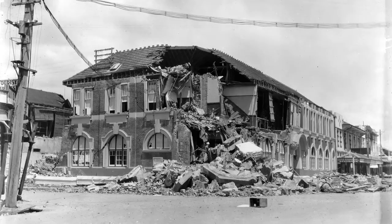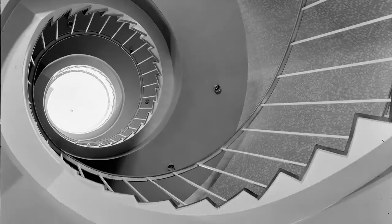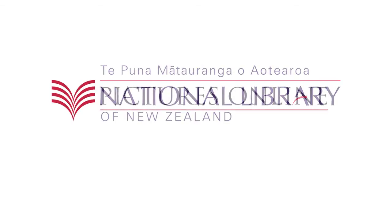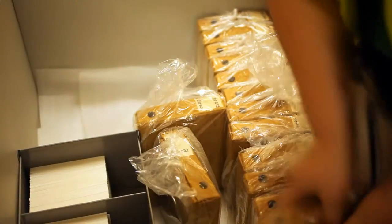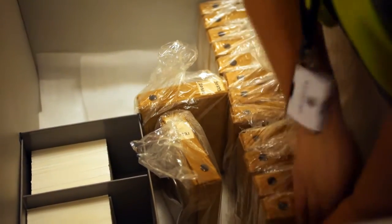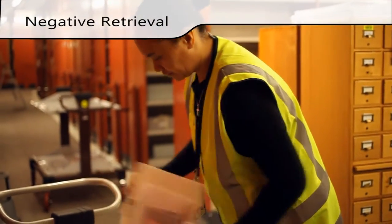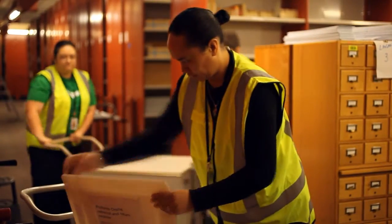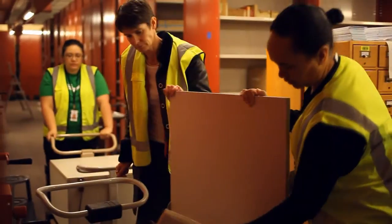Images for the Pictures Online project are digitised from the original negatives. The Alexander Turnbull Library houses its collections of negatives in special, controlled atmosphere stores. The temperature in these stores is kept at 2 degrees for film and 15 degrees for glass plates. Air quality in these stores is also tightly controlled.